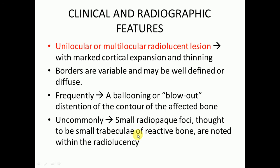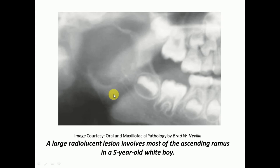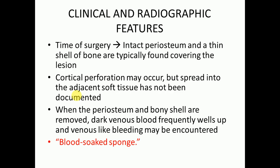Here is the image of a patient showing a radiolucent lesion at the ascending ramus — this is the aneurysmal bone cyst. We can see a unilocular radiolucency present here; other locules are not visible, so basically it is a unilocular radiolucent lesion. At the time of surgery, intact periosteum and a thin shell of bone are typically found.